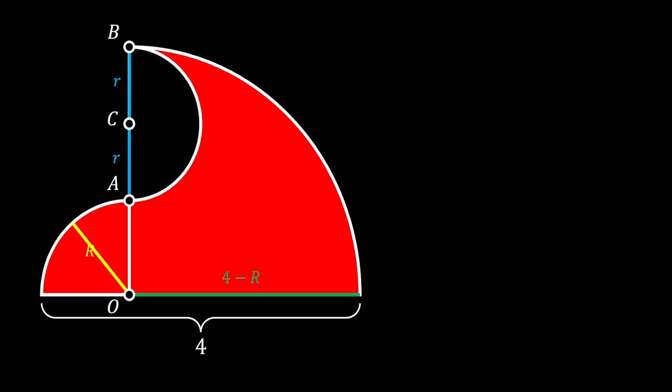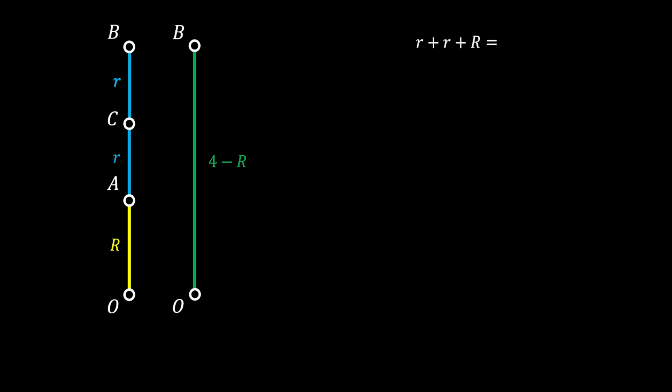As before, we can rotate this radius of the smaller quarter circle and we will get that the line OA is also equal to the value of r. And if we do this for our bigger quarter circle, we can see that the line OB has the length of 4 minus R. Now we can use the equality of the lengths of these lines to form our equation. The combined length of lines OA, AC, and CB must be equal to the length of line OB. So we can say that r + r + R must be equal to 4 minus R.